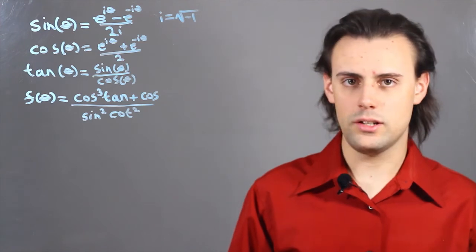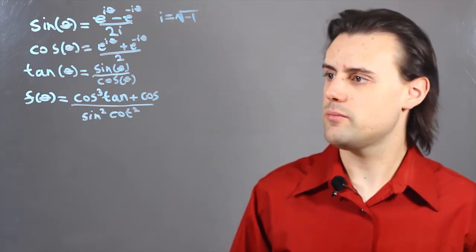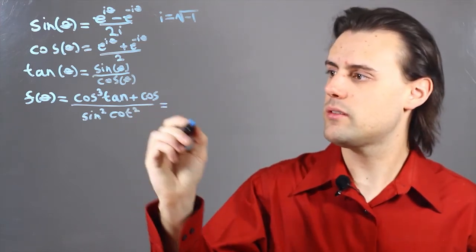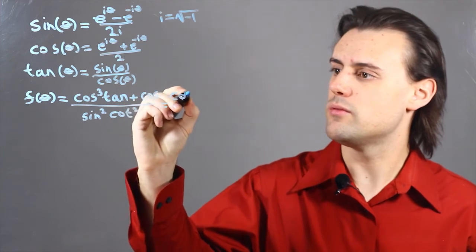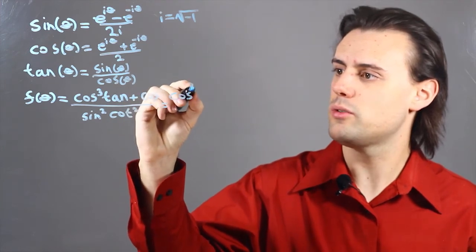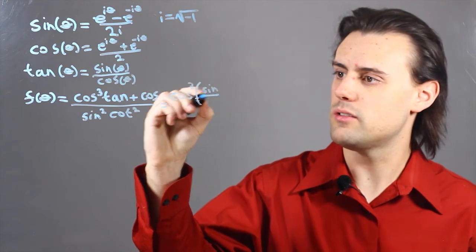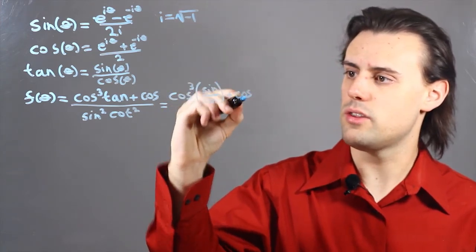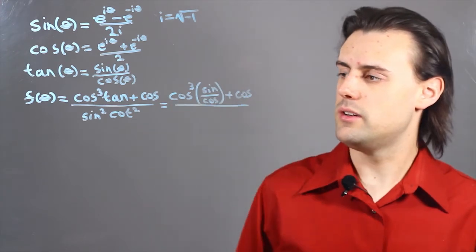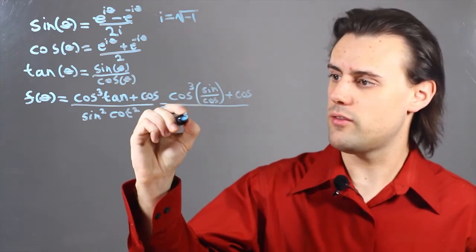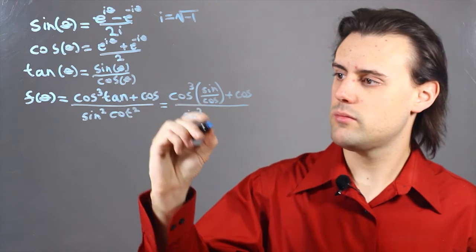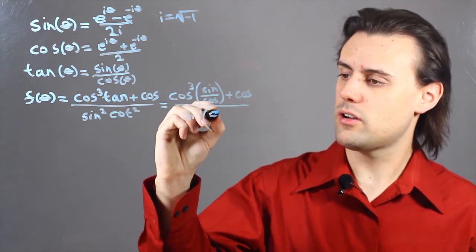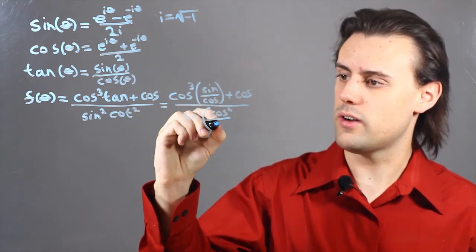Cotangent is simply 1 over tangent, so I can rewrite this in terms of just sines and cosines as cosine cubed times sine divided by cosine plus cosine in the numerator, and in the denominator I'll have sine squared times cosine squared divided by sine squared.